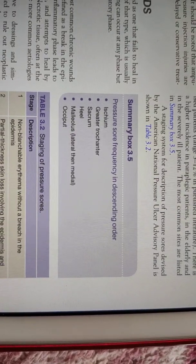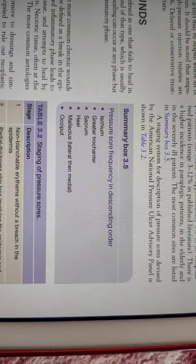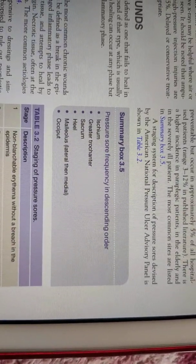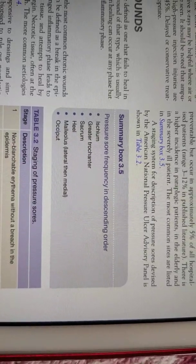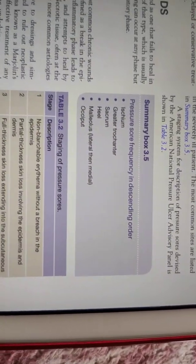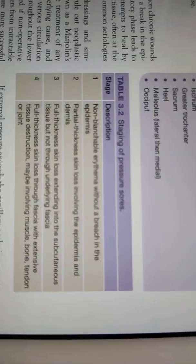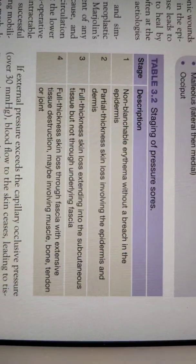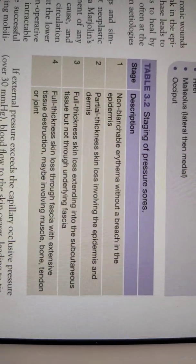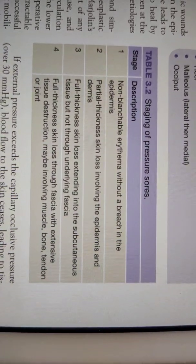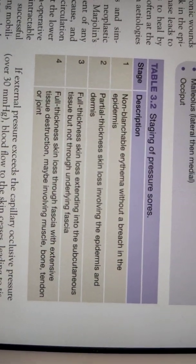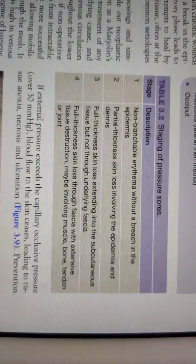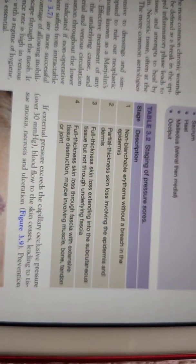Pressure ulcers mostly occur at specific sites: in the leg at the sacrum, ischial tuberosity, greater trochanter, heel, occiput, and mainly the lateral malleolus. Staging: stage 1 — erythema not blanchable, without breach in epidermis. Stage 2 — breach up to epidermis or dermis, not reaching subcutaneous tissue. Stage 3 — full thickness skin loss extending to subcutaneous tissue but not reaching fascia. Stage 4 — reaches fascia, involving bone, muscles, tendons, etc.